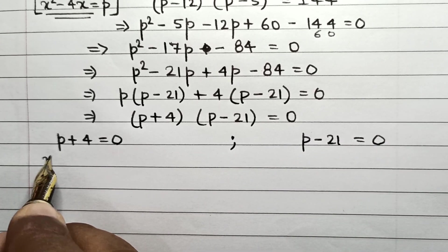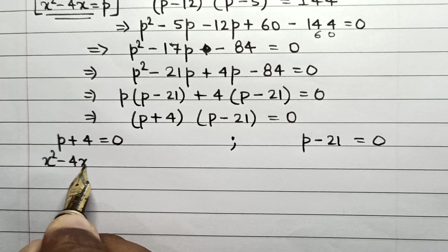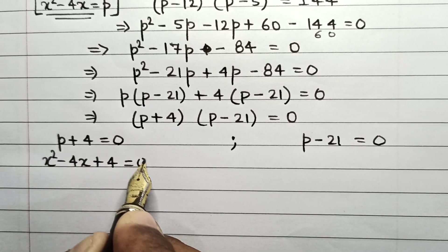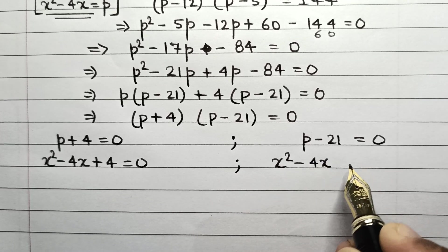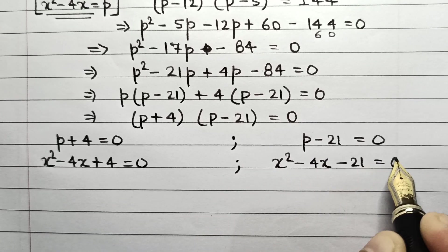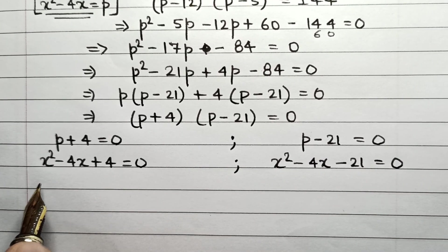Now the value of p is x² - 4x. So x² - 4x + 4 = 0 and x² - 4x - 21 = 0.